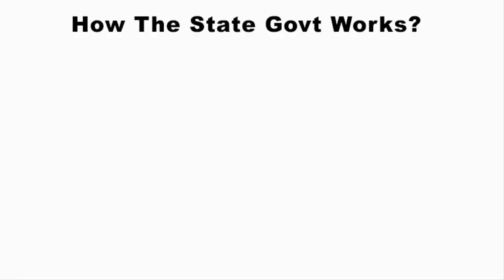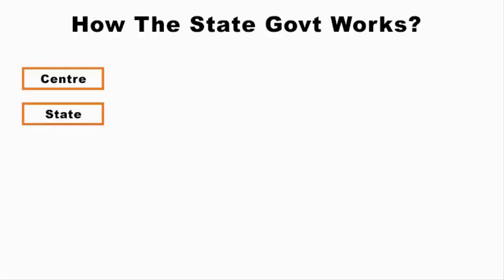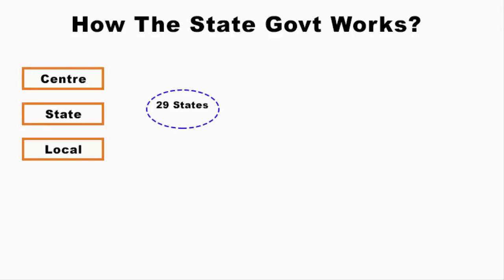In this video, we will learn about how the state government works. As we know, in India we have three levels of government: the centre, state and local government. India has 29 states and 7 union territories. All 29 states, as well as 2 union territories — that is Delhi and Puducherry — have their respective state governments.